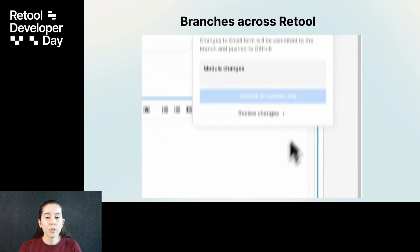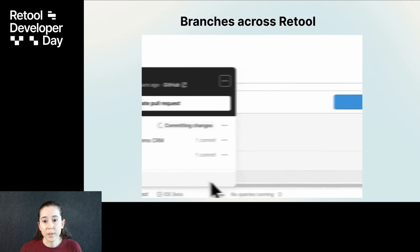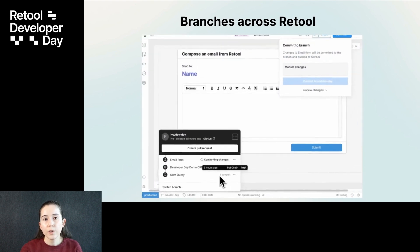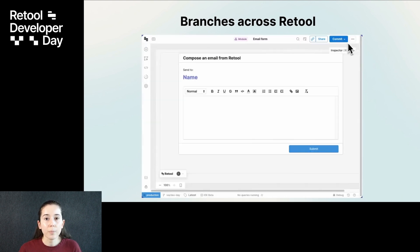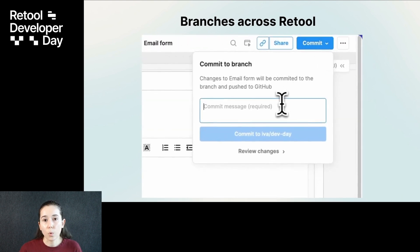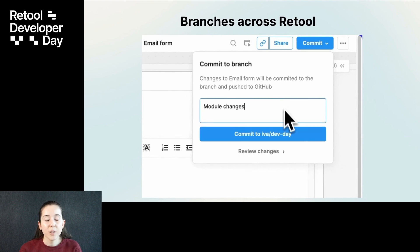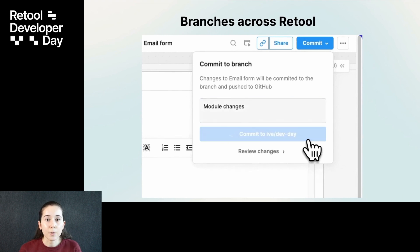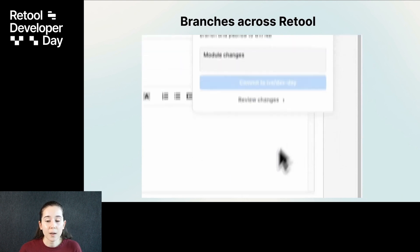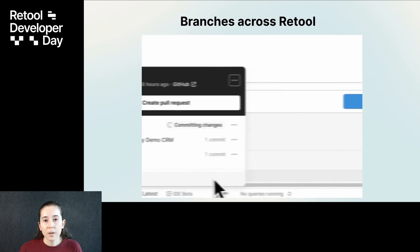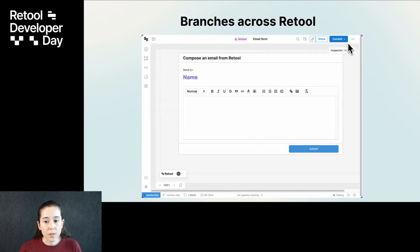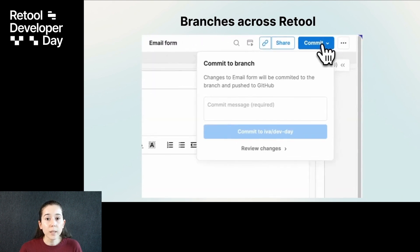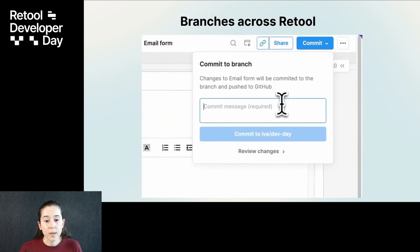Now, when you open a branch on Retool, you can commit to that branch from any number of apps, modules, or library queries, and you can easily see how those changes interact. This also means you can easily coordinate related changes since you'll only need one pull request.